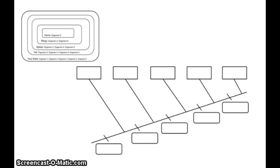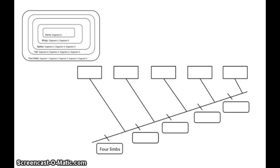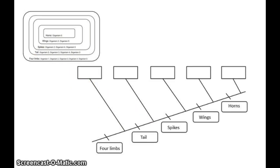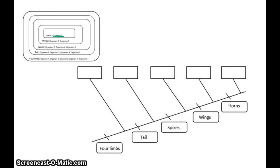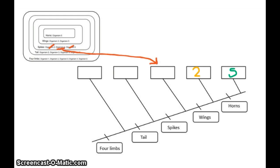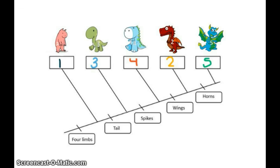Remember that at the bottom of the cladogram, we have the most shared characteristics. So the characteristic of four limbs would go way down here. The next shared characteristic, tail, would go here, and so on for spikes, wings, and horns. We work backwards to add the organisms. Organism five goes first. Since we already used organism five, we can cross him out, which leaves us organism two as the next one. We cross out two and five, leaving us organism four. So now we have our completed cladogram and can use it to analyze evolutionary relationships.